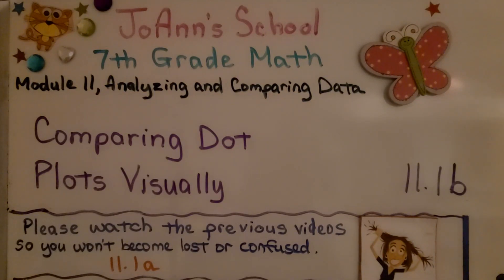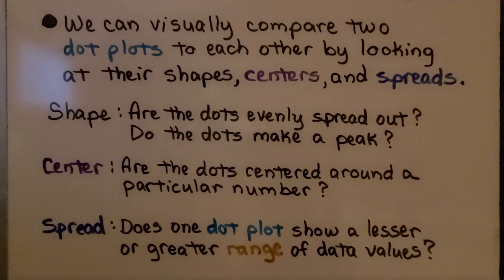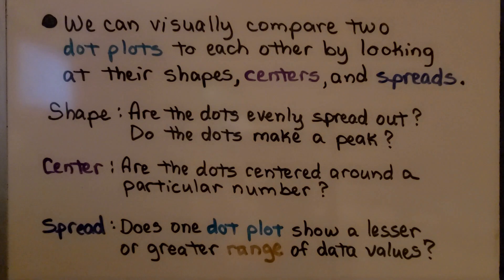Lesson 11.1b: Comparing Dot Plots Visually. We can visually compare two dot plots to each other by looking at their shapes, centers, and spreads. The shape: are the dot plots evenly spread out? Do the dots make a peak? For the center, are the dots centered around a particular number? For the spread, does one dot plot show a lesser or greater range of data values?